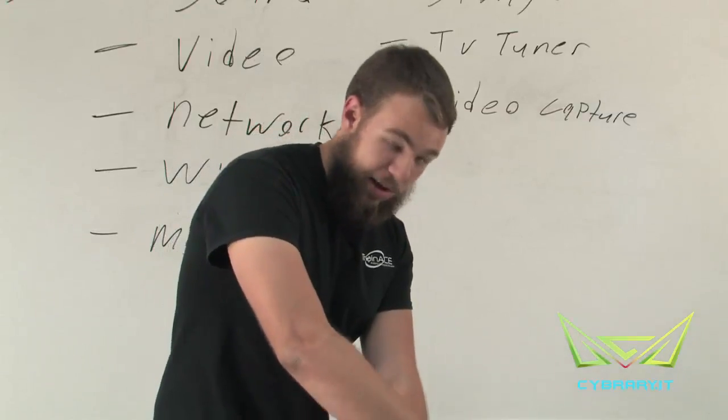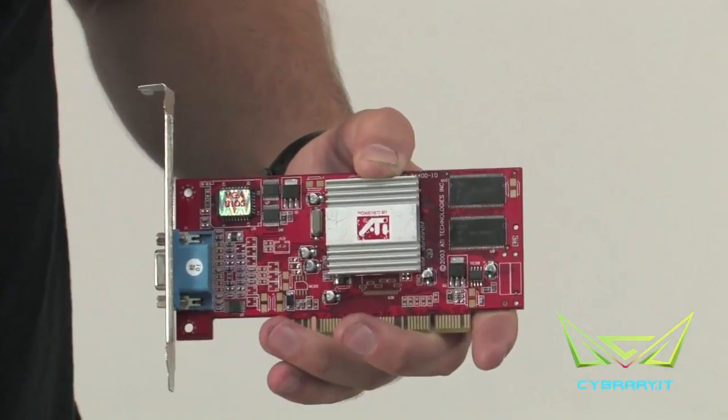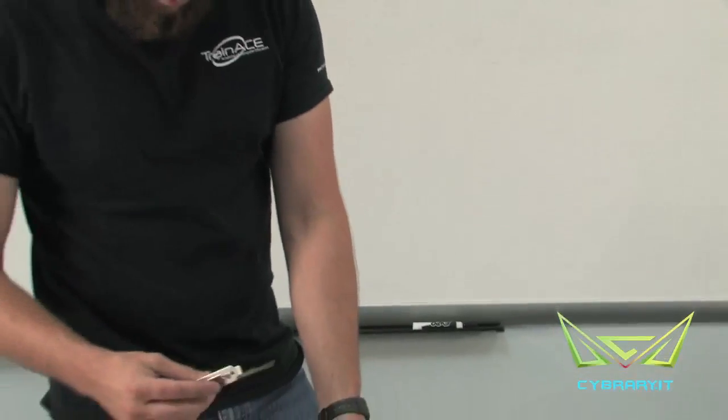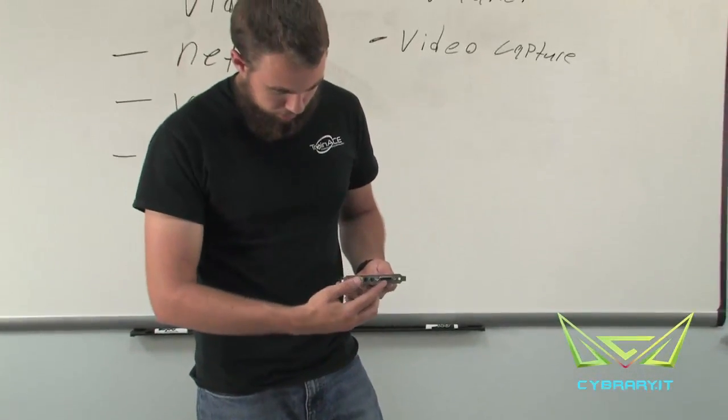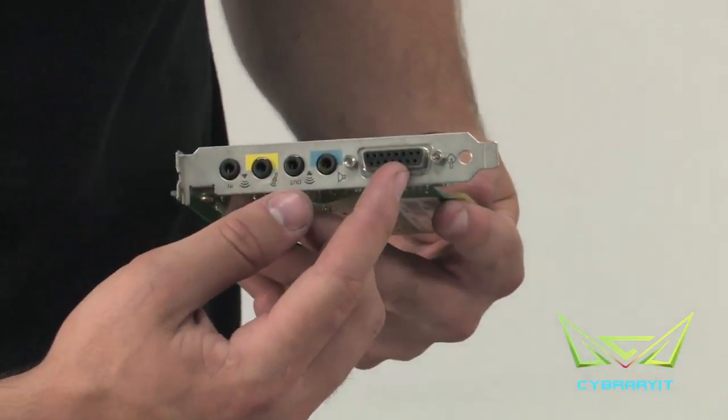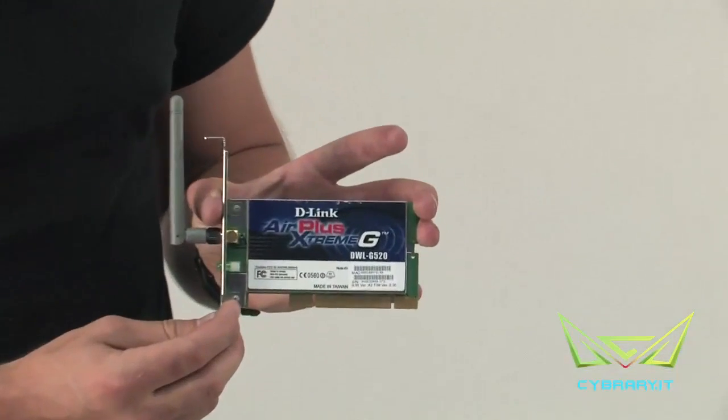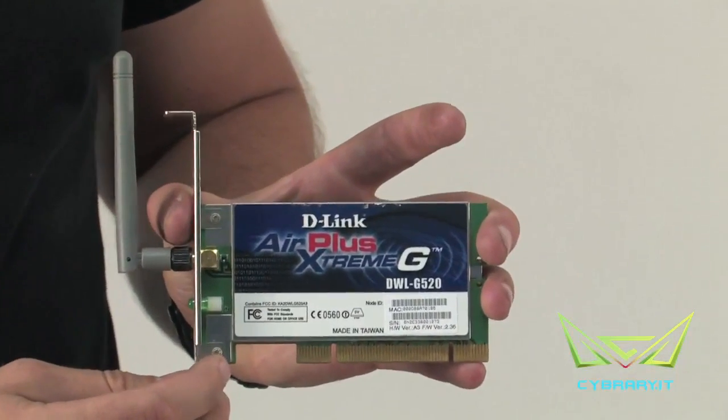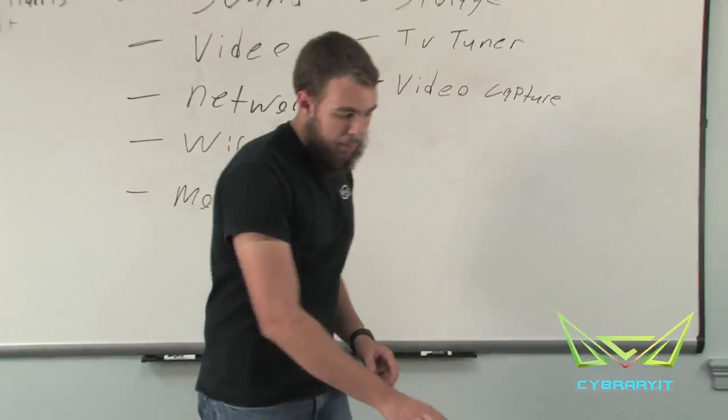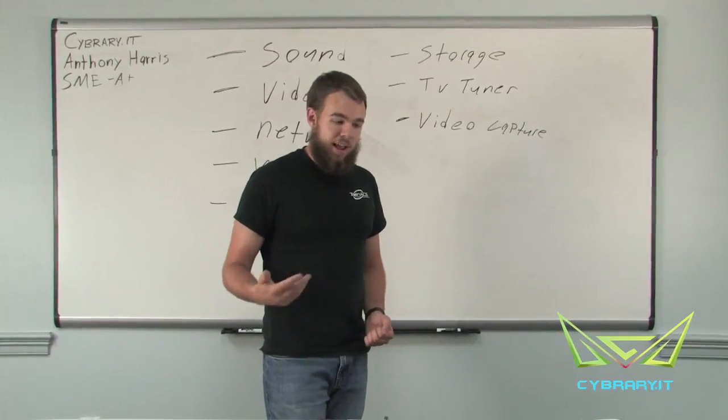A couple examples of some expansion cards we have. This would be an example of an extended graphics card. We have our sound card that also has video capabilities. And this would be an example of a wireless card that you could add to your computer. Again, it all really depends on what type of capabilities you're looking for and what you need to add.